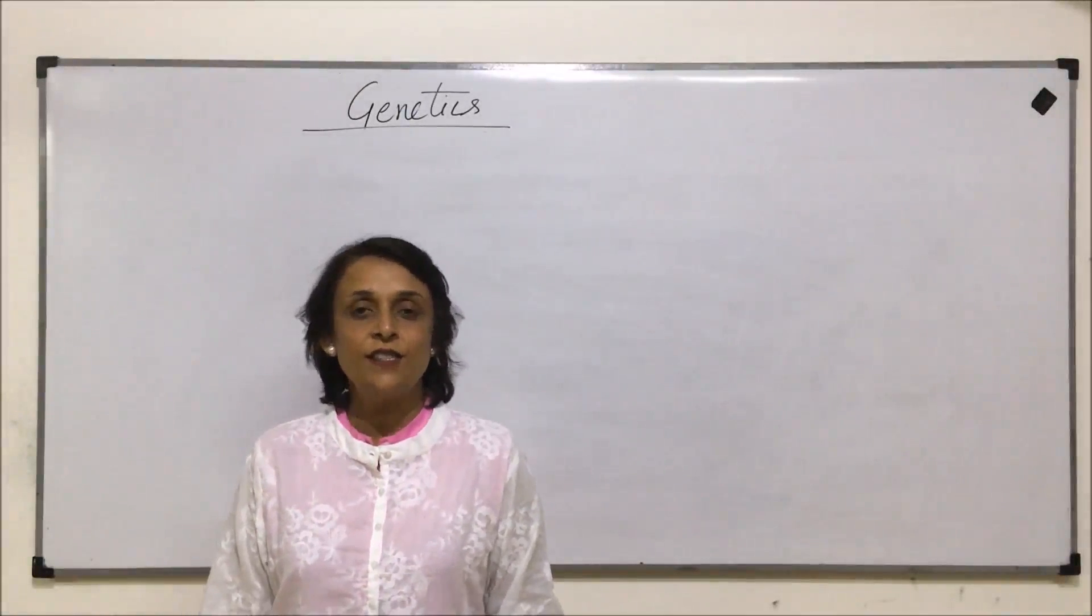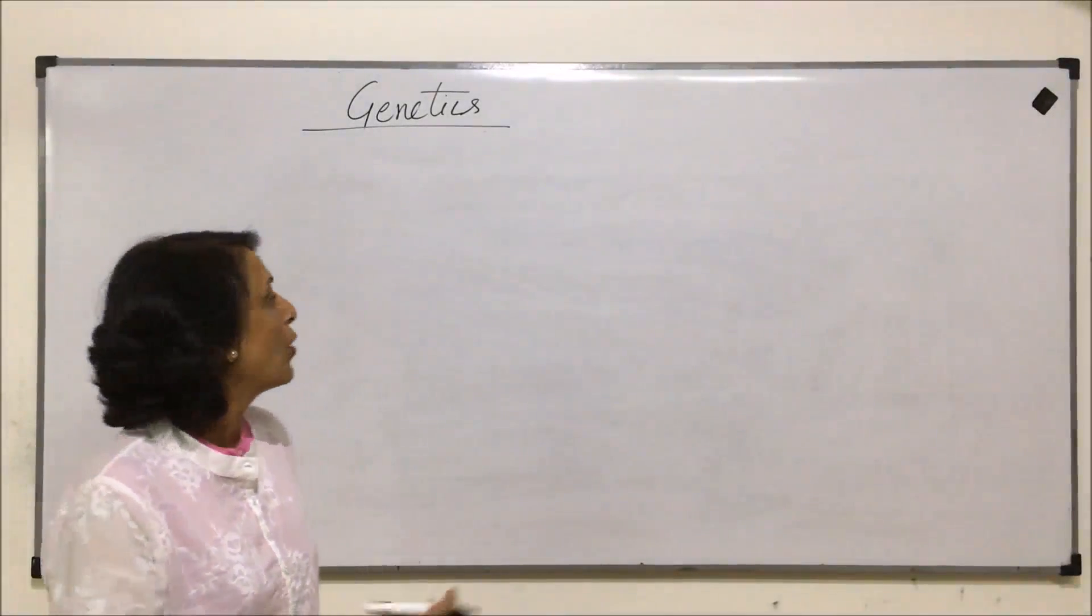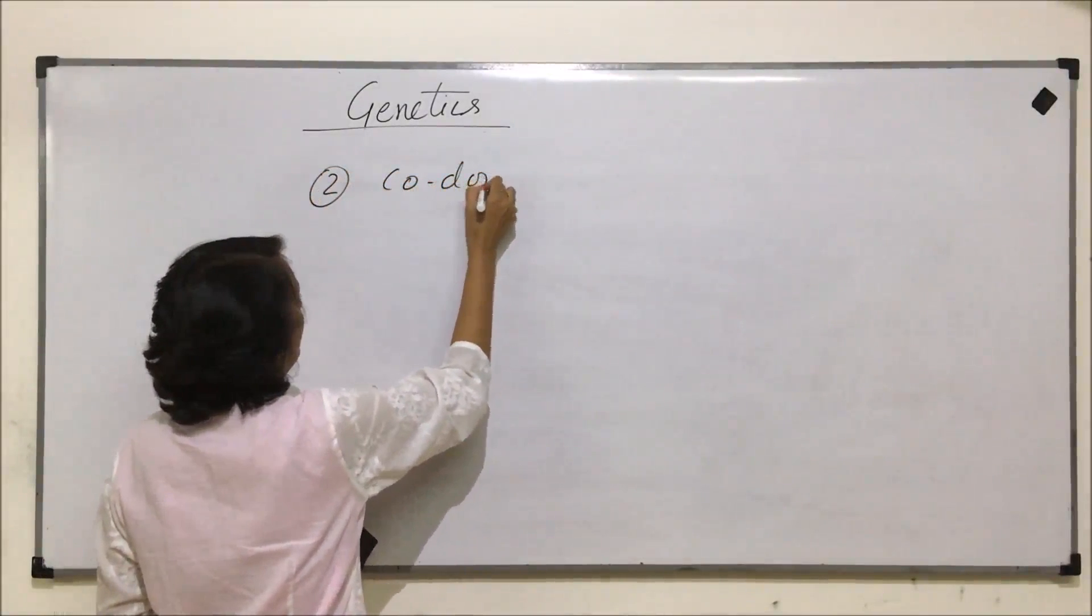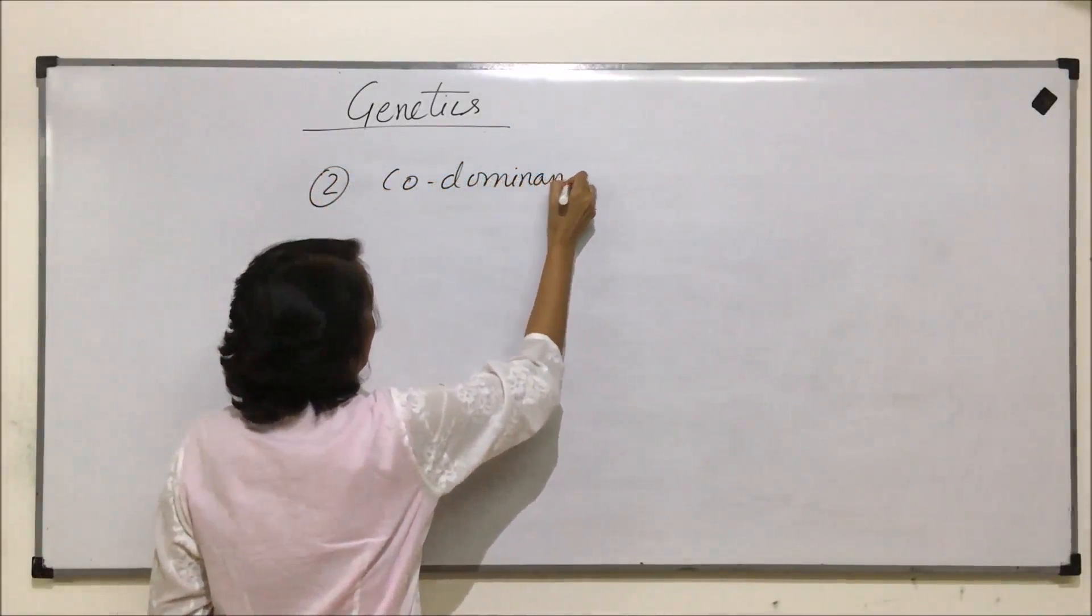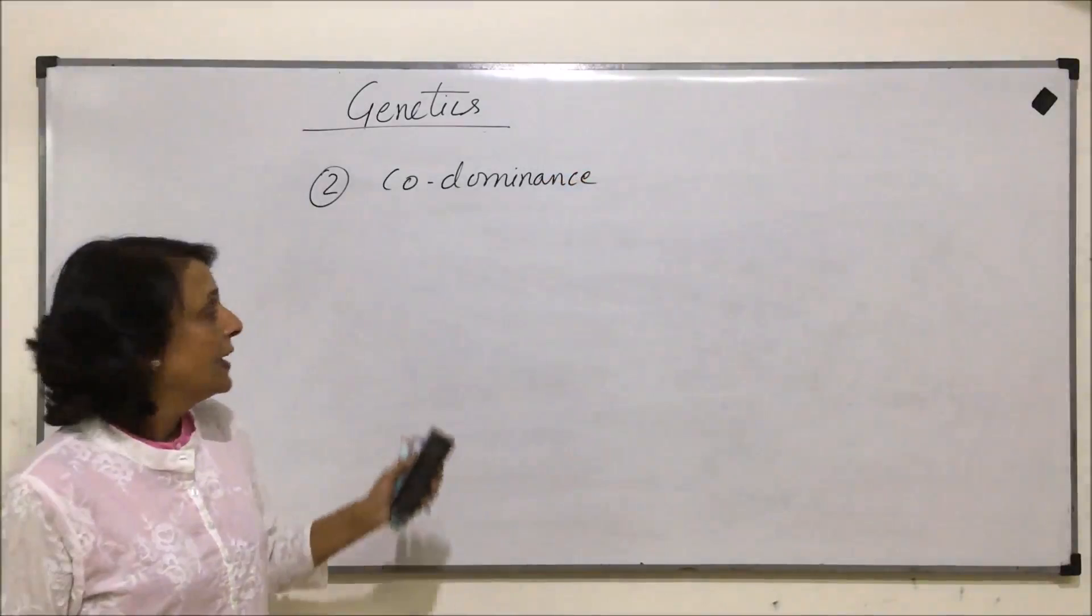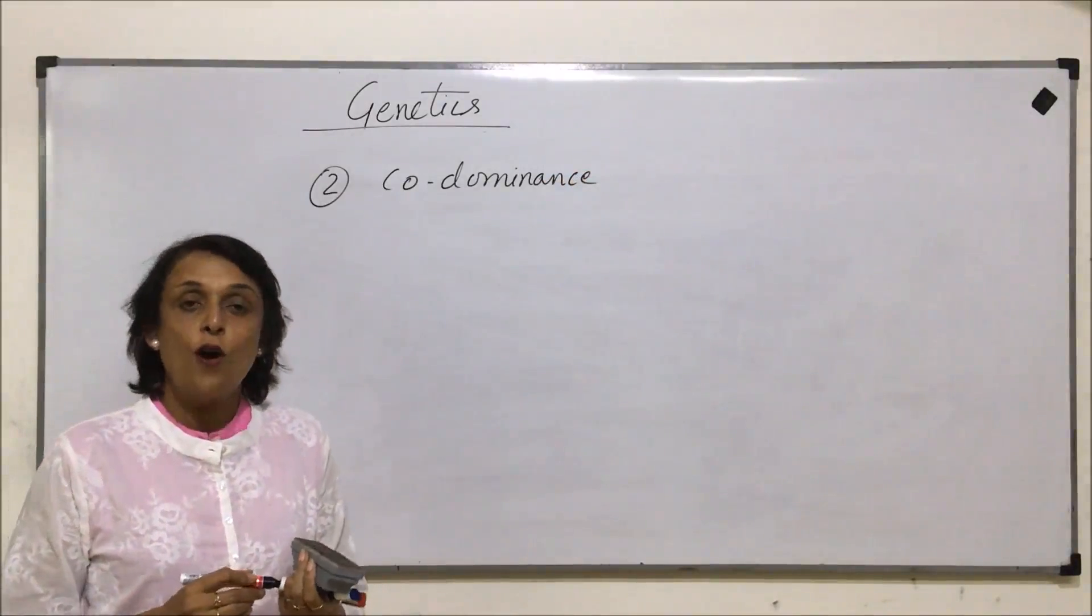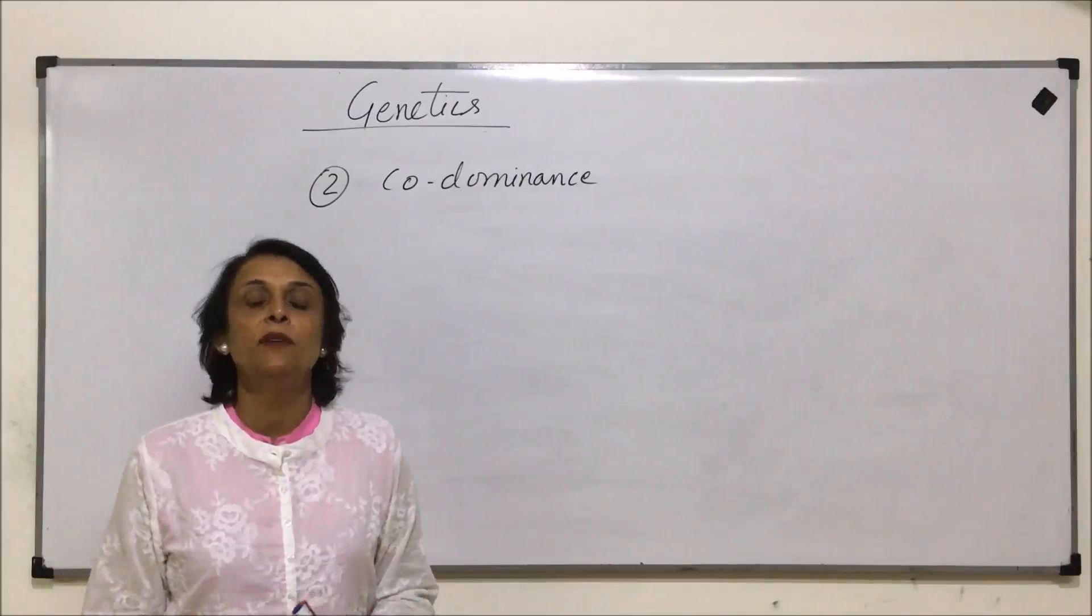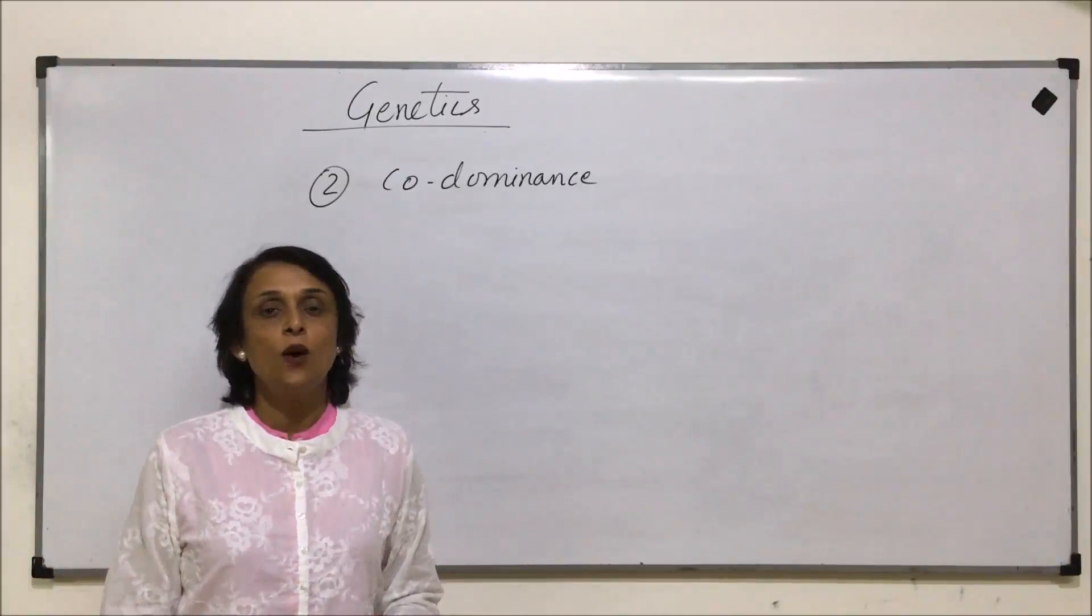The next type of inheritance we are discussing is co-dominance. Co-dominance is also a variation from Mendel's principle. When we talk of the law of dominance, we say only one allele, the dominant allele, dominates over the recessive one.